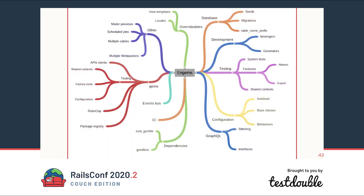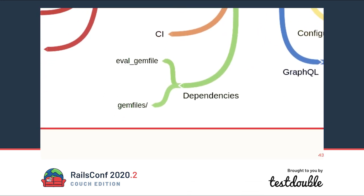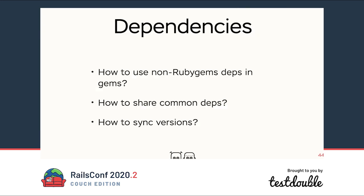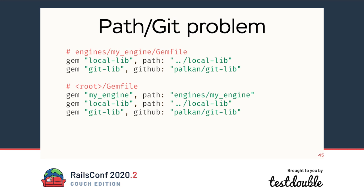Let's start investigating our map. Our first stop is dependencies management — this is actually the first problem you'll encounter when using engines. The first problem occurs when you have non-Ruby gem dependencies: dependencies loaded from GitHub, local sources, or other Git repositories. You cannot specify them in the gemspec used by the gem command from the Gemfile, so you have to duplicate this definition in your root Gemfile. That makes it harder to maintain and synchronize dependencies, and it's easy to miss syncing a dependency and end up with problems in production.